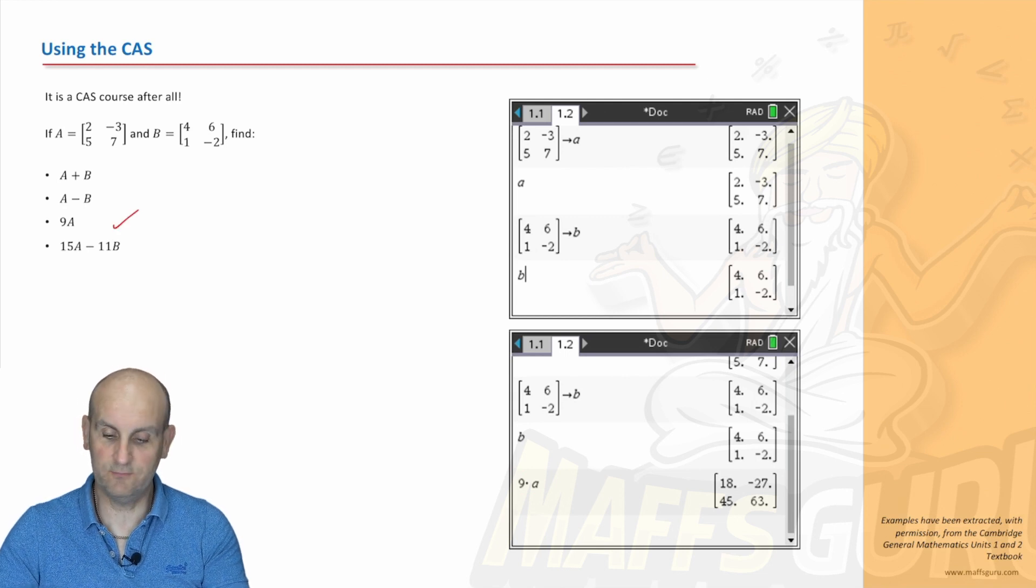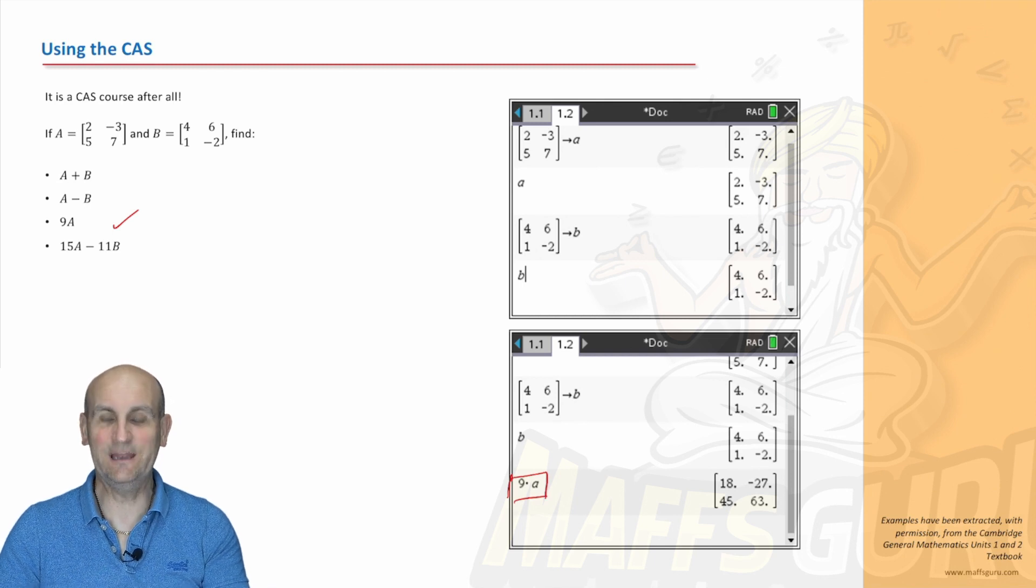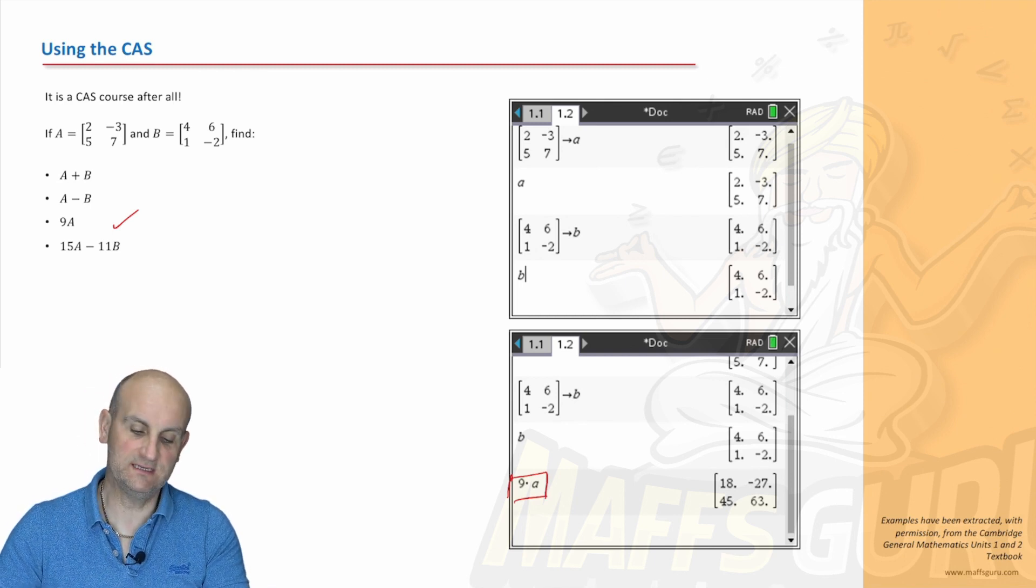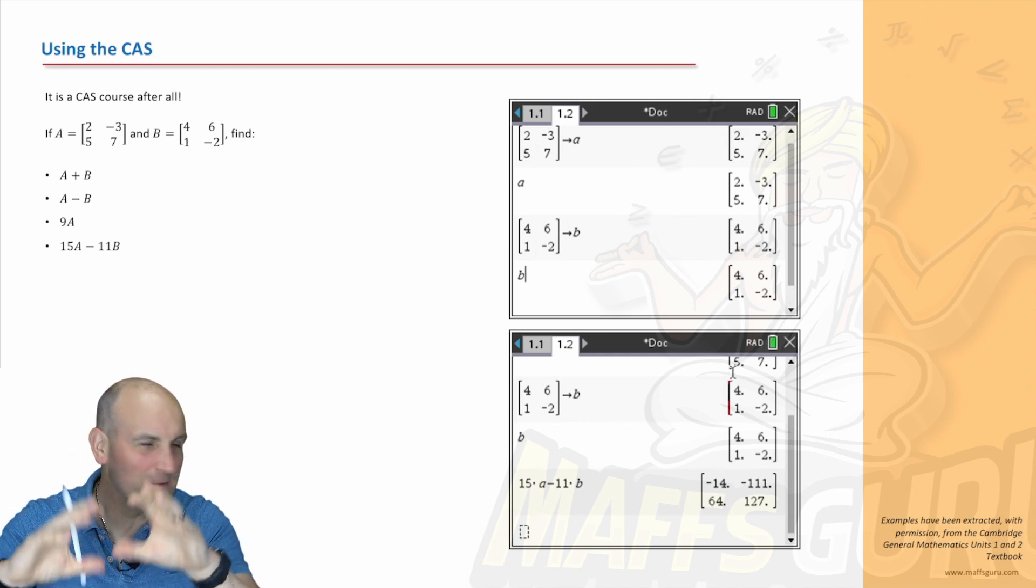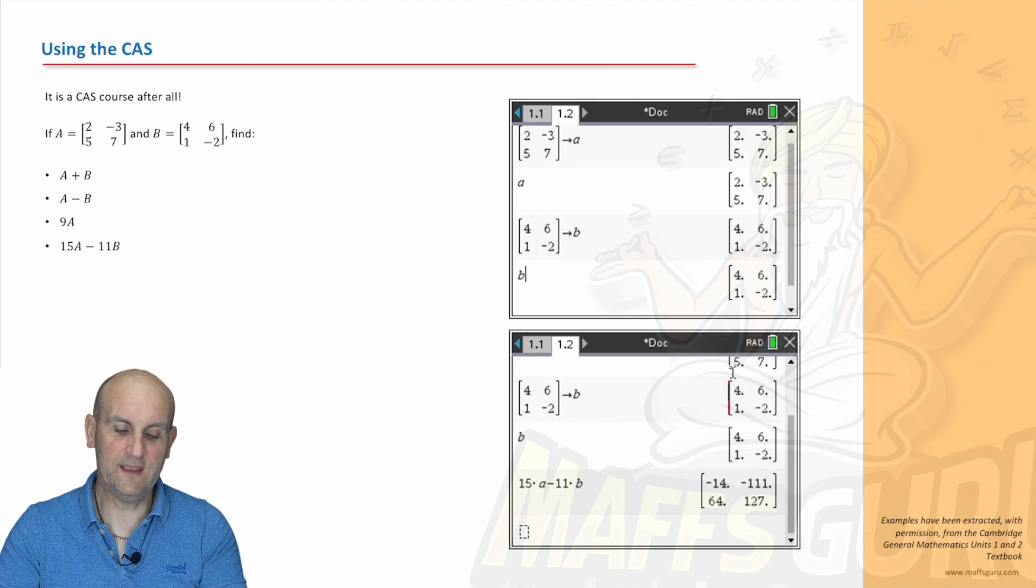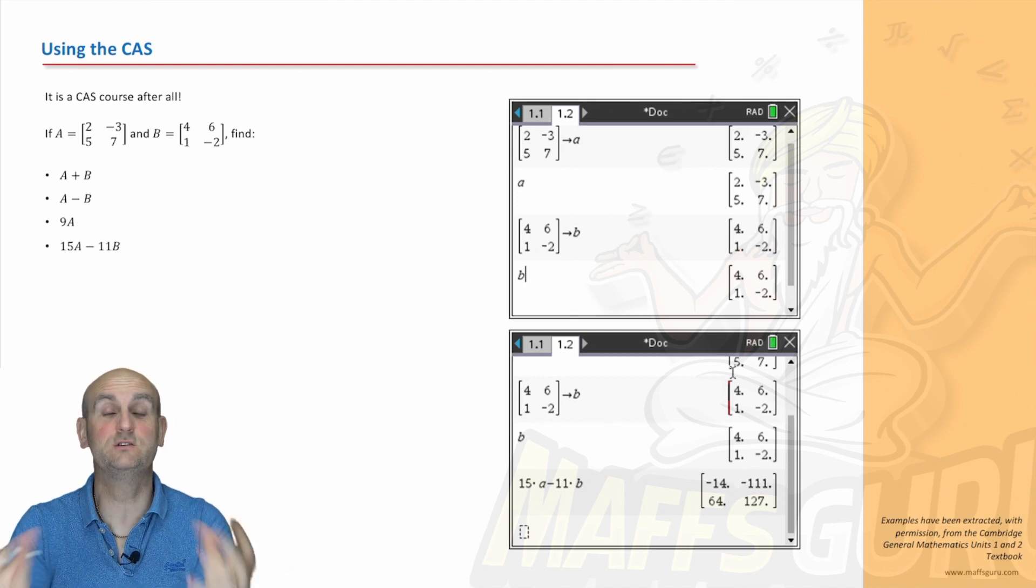Reckon it's getting difficult? 9A. What do you reckon I did? Well, I've already got A in my memory. So I just 9 times A, which gave me 18, minus 27, 45, and 63. And it doesn't matter how big the numbers get or if I'm combining these type of things. What do I get? 15A minus 11B gives me minus 14, minus 111, 64, and 127. Now all of these could have actually been a real world situation. We don't know.